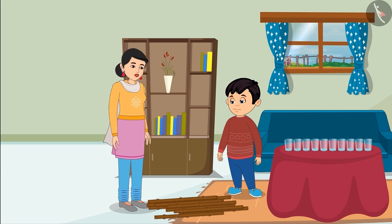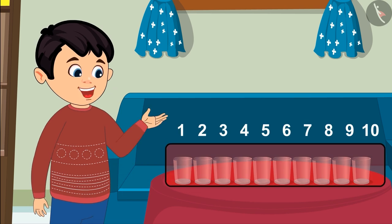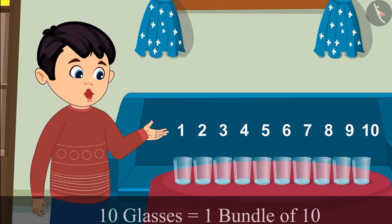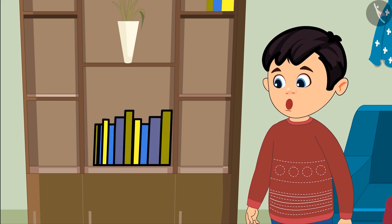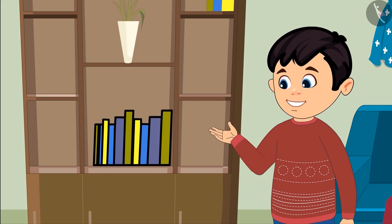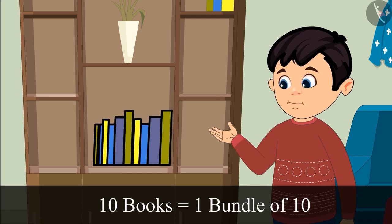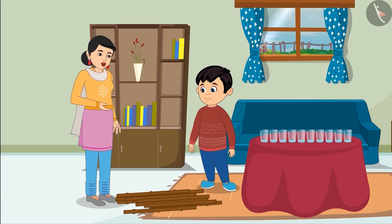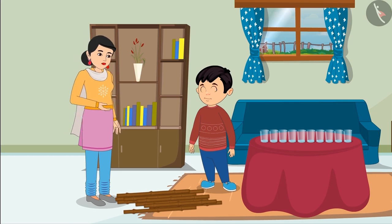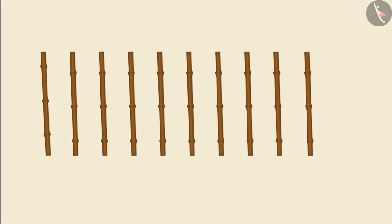Can you spot some objects in this room that are in a bundle of 10? These are 10 glasses, so we can call their group a bundle of 10. Similarly, those books are also 10, so they are also making a bundle of 10. Now let's count the remaining wooden sticks — these are 10 sticks, so let's make their bundle of 10.